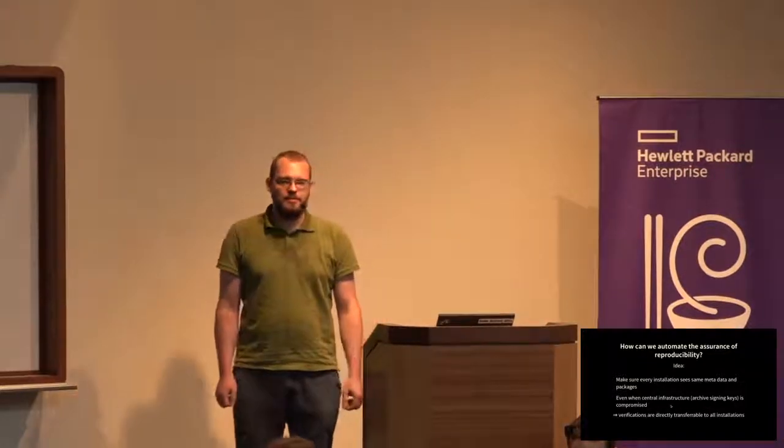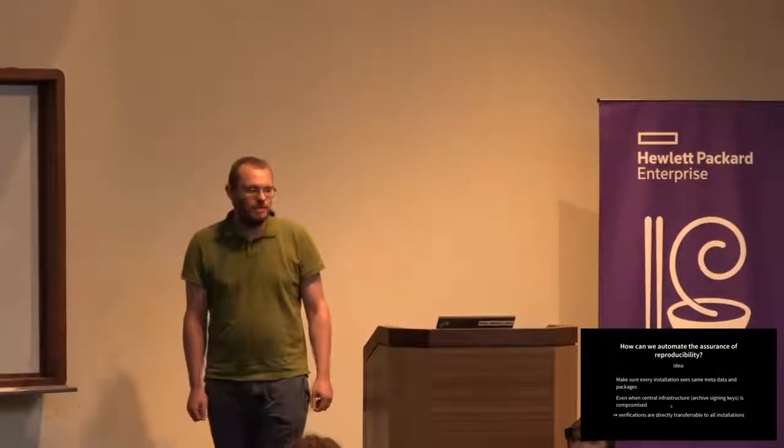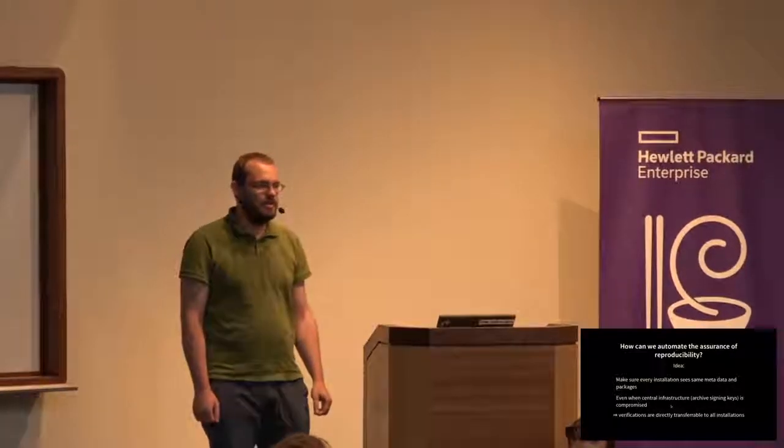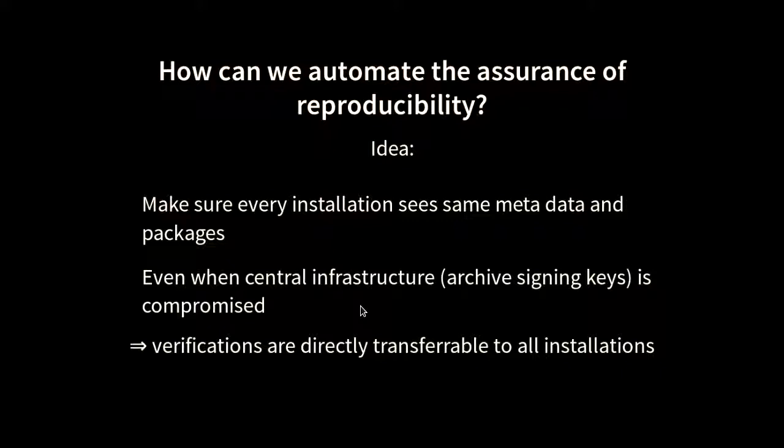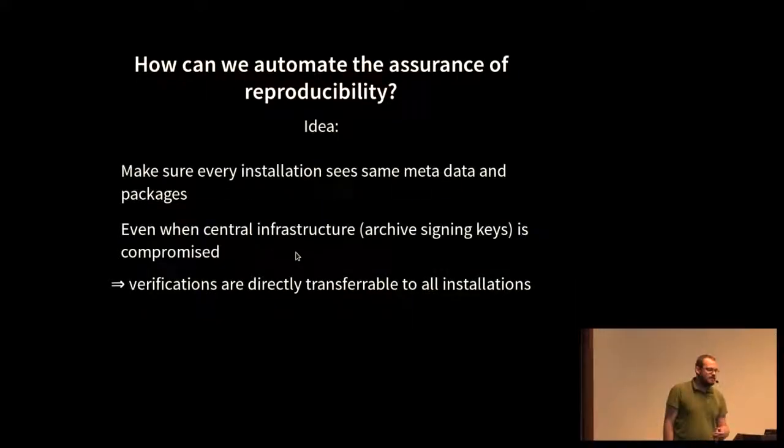And the core idea that we are going to use is that we will try very, very hard to make sure that every installation is the exact same metadata and packages from the archive. And this should hold true even if components of the central infrastructure, critical components, even such as the signing key, are compromised. So that's a property we currently don't have, that we can have, and that perhaps we should have. And this gives us the nice property that all verifications that we do on the packages are directly transferable to every installation and there can be no doubt that it's applicable to a particular installation.